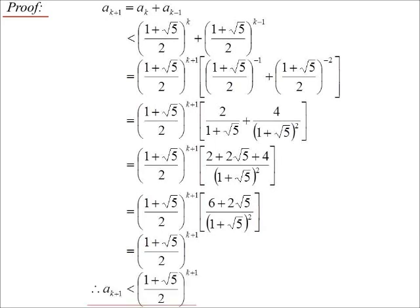And so sure enough, ak plus 1, therefore, is less than 1 plus root 5 on 2 to the power of k plus 1. Now, I don't think I've written the conclusion there. For this one, I would have to say true for k plus 1 if true for k and k minus 1. And then in our final line, I'd say, well, since it's true for 1 and 2, then it would be true by induction.